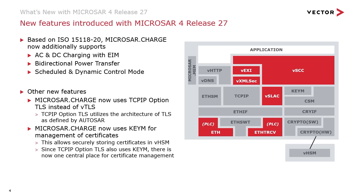Let's take a look at what's new with Microsar 4 release 27. The new major feature is the support of ISO 15118-20. We now support AC and DC charging with EIM, bi-directional power transfer, as well as scheduled and dynamic control mode. There has also been a change in the architecture of Microsar Charge. Since release 1911, AUTOSAR provides a definition for a TLS extension to the TCP/IP module. To be as much in line with the official AUTOSAR architecture as possible, we've decided to replace VTLS with the so-called TCP/IP option TLS for Microsar Charge.